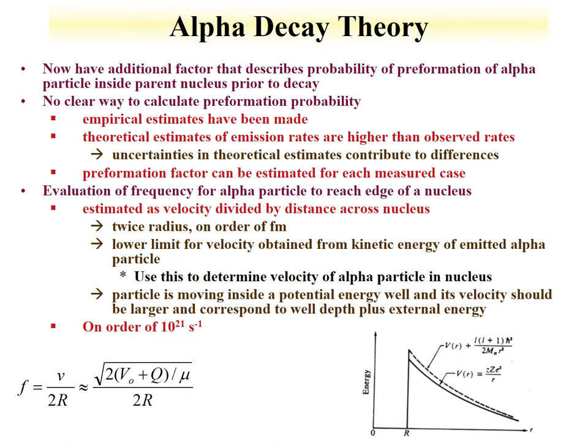We have an additional factor — the preformation factor of the alpha particle in the nucleus — that can help us describe alpha decay theory in more detail. Unfortunately, we have no clear way to calculate this preformation probability from first principles. We can use empirical data, and fundamentally the difference between the theoretical estimates and the observed emission rates can be used to evaluate what the preformation factor should be.